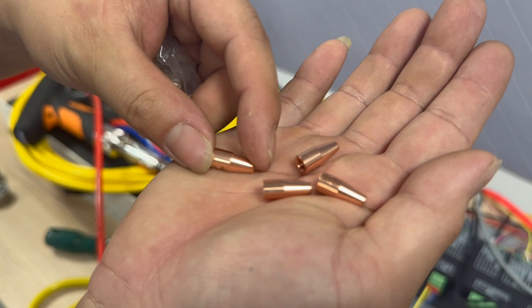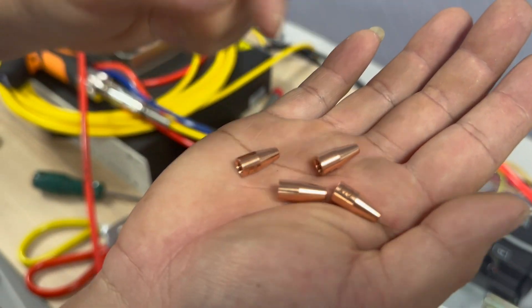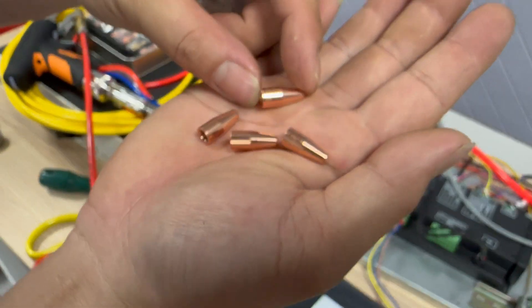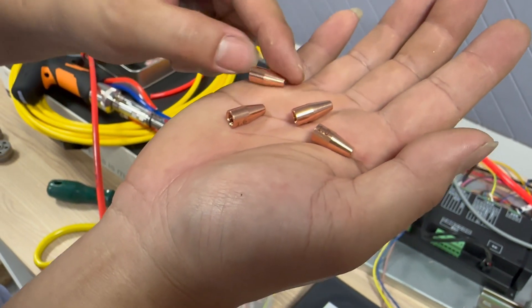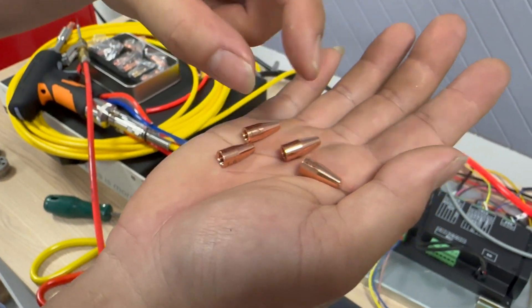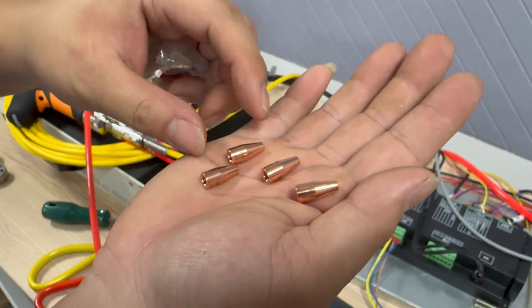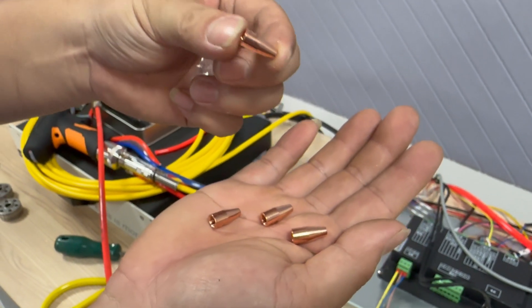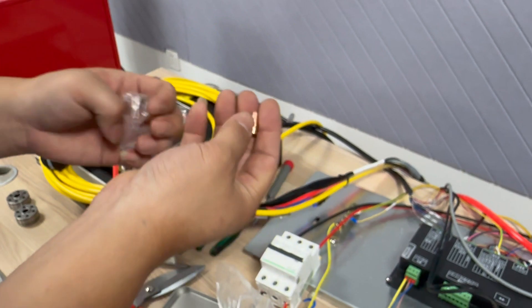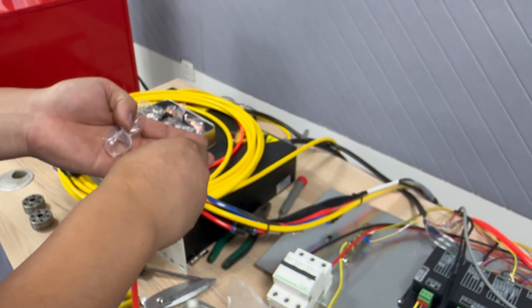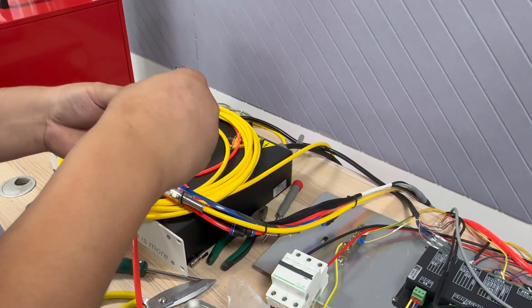Each nozzle is labeled with the number: 1.6, 0.8, 1.2, 1.0. According to our selected fitting wire with diameter of 1.2, we select a nozzle with corresponding size.